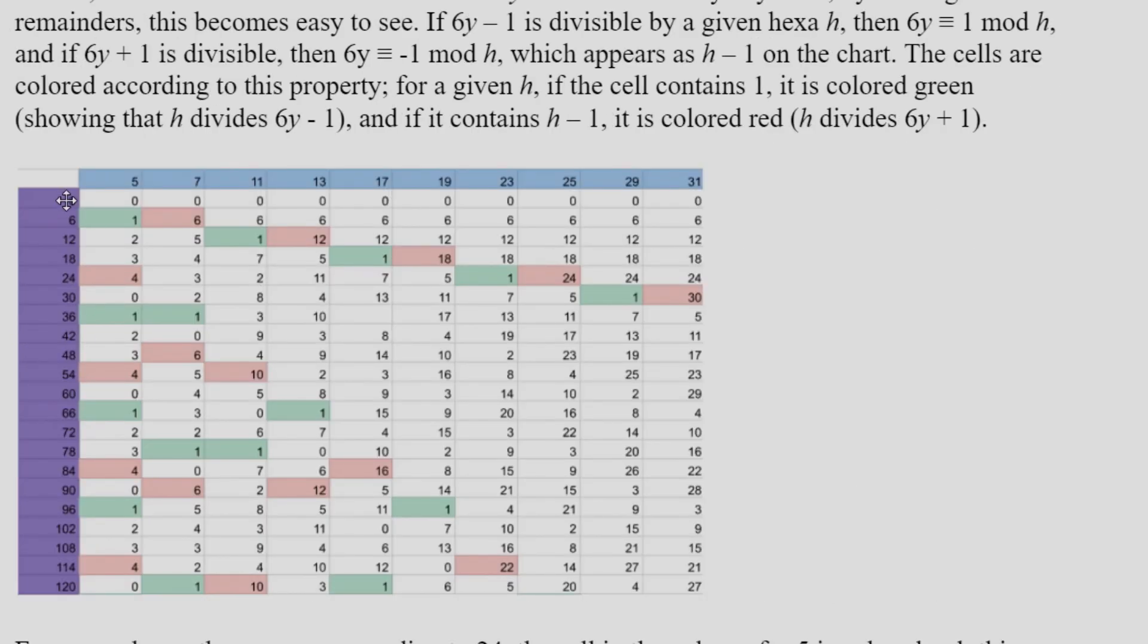Now to that end I created this chart where on this axis here in purple those are the anchors, and then on the top in blue those are the hexas. And each cell is filled with the remainder of the anchor mod the hexa. So 18 is 3 mod 5. In particular we're interested in those cells which contain either a 1 or h minus 1, where h is the hexa in that column.